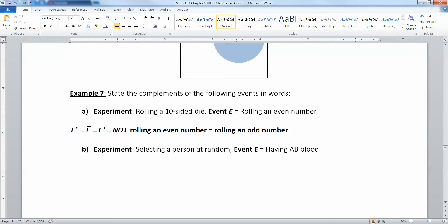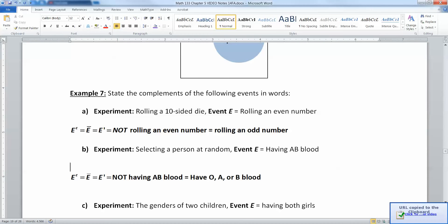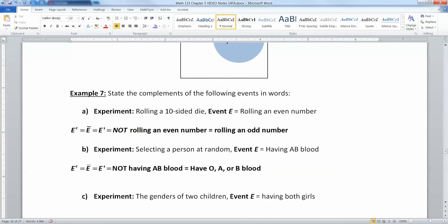What about you want to select a person at random? And event E is that they have AB blood. So then the complement of that is that they do not have AB blood. You could say they have A blood, O blood, or B blood. The other three main types.